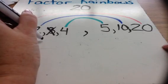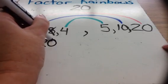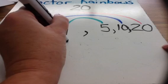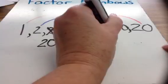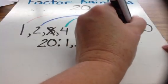So now I've found that all of the factors of 20 are 1, 2, 4, 5, 10, and 20.